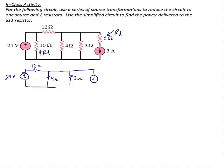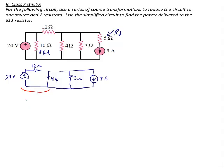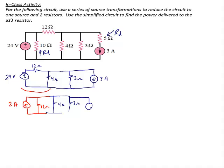Here's the new circuit with dummy resistors removed. I now have a 24-volt source in series with a 12-ohm resistor, in parallel with a 4-ohm resistor, a 3-ohm resistor, and a 3-amp current source. I'm going to do a source transformation on the left half: 24 volts in series with 12 ohms becomes 24 divided by 12, which is 2 amps, in parallel with 12 ohms. Everything else I copy down: 4 ohms, 3 ohms, and 3 amps.